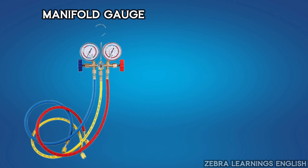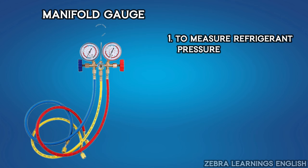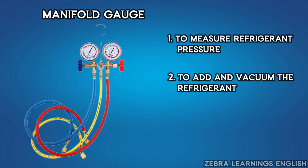We can measure the pressure of refrigerant in AC unit by manifold gauge. It is used not only for refrigerant pressure measurement but also for vacuuming and adding refrigerant.